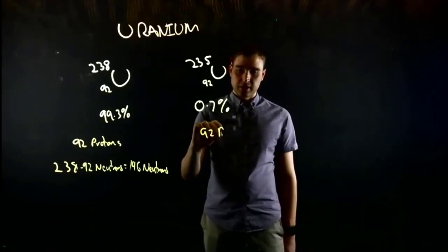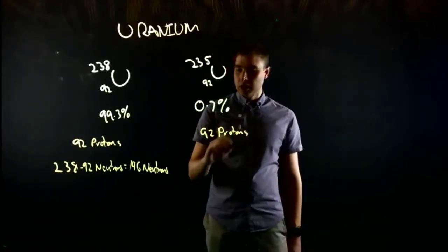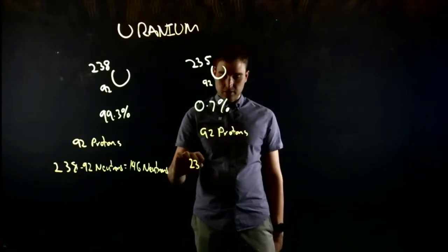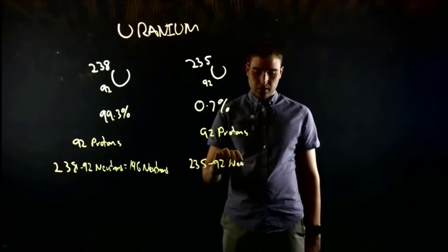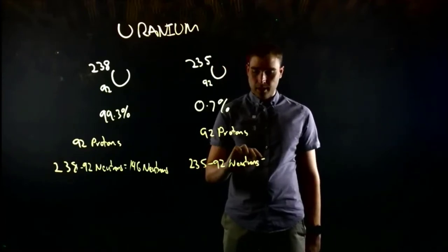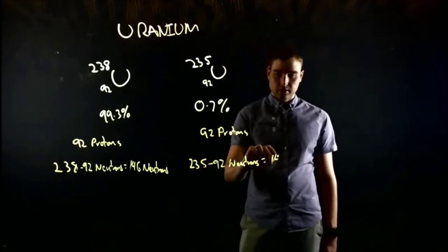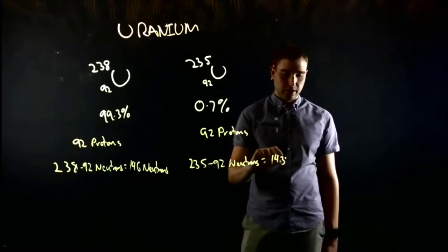So uranium-235, it still has 92 protons. This time it's got 235 minus 92 neutrons, which is 143, 143 neutrons.